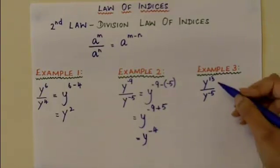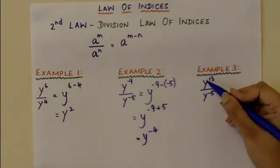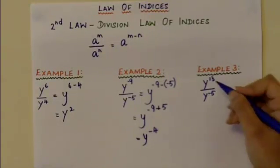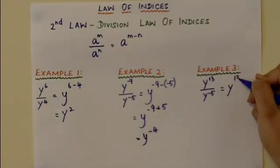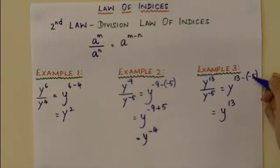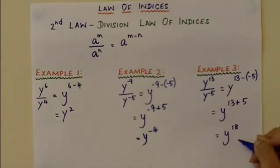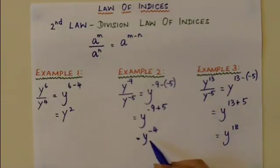Example 3: you have y to the power of 13 divided by y to the power of minus 5. You can see that the power of the numerator is 13 and the power of the denominator is minus 5. To simplify this, you apply the division law of indices and take away the power of the denominator from the power of the numerator. Therefore, it is y to the power of 13 minus of minus 5. Since minus times minus is plus, it becomes y to the power of 13 plus 5, which is equal to y to the power of 18.